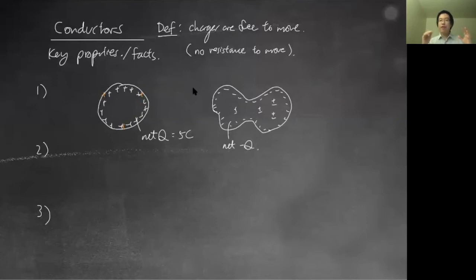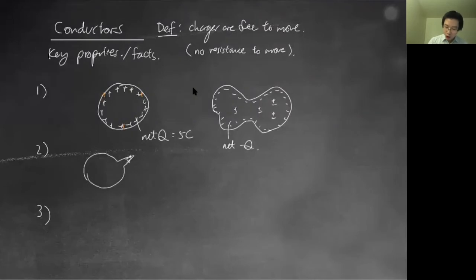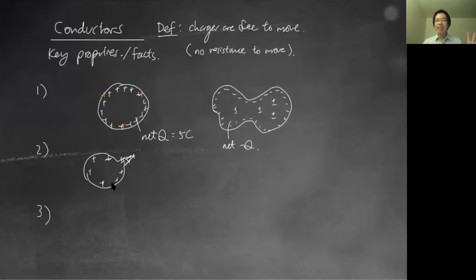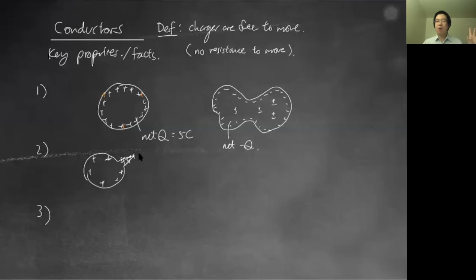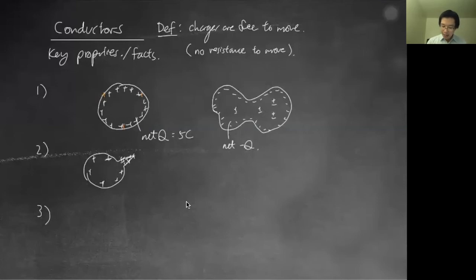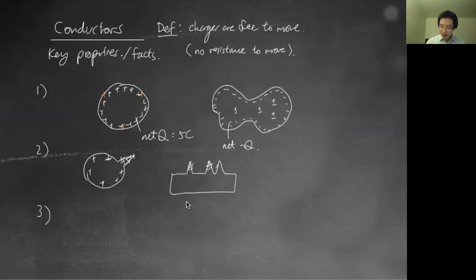Property two: if the conductor has sharp edges, the net charges will actually congregate more at the sharp edges than elsewhere. If one part is very sharp, there will be far more charges on that sharp edge. The logic is the same — if charges want to get as far from each other as possible and a tip protrudes out, charges will go there more than elsewhere. So charges congregate at sharp surfaces. If I have a block, most charges will aggregate at the sharp corners.